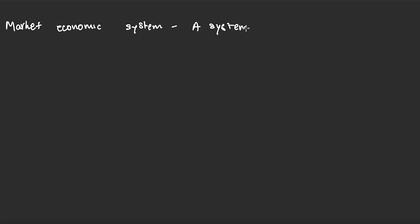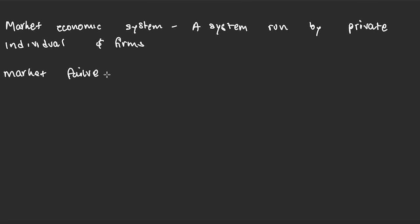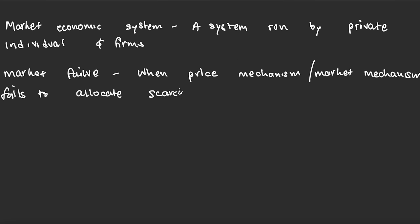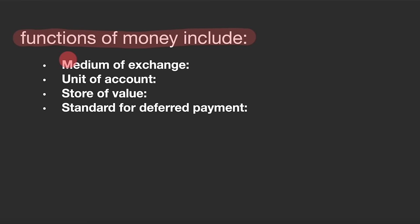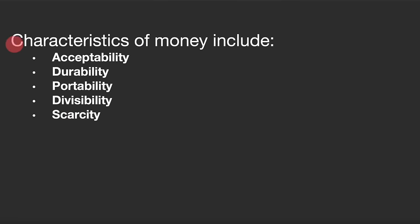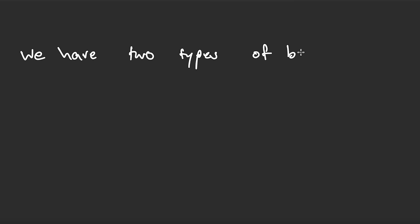The market economic system is a system run by private firms and individuals. Market failure is when the price mechanism fails to allocate scarce resources efficiently. In a mixed economic system, the government also plays a role. Functions of money include medium of exchange, unit of account, store of value, and standard for deferred payment. Characteristics of money include acceptability, durability, portability, divisibility, and scarcity. There are two types of banks: commercial banks and central banks.